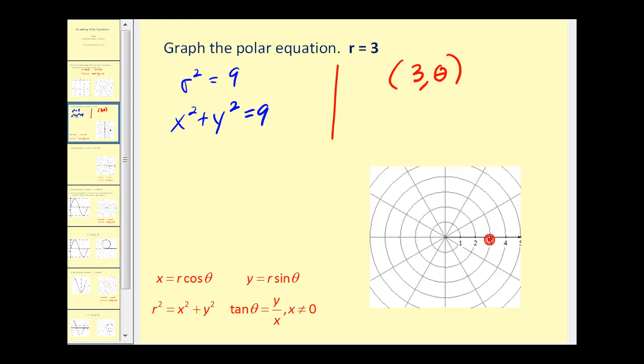So we'd have a point here when theta is equal to zero, when theta is 30 degrees, r is three, 60 degrees, r is three, 90 degrees, and so on. And what you'll see is we're forming a circle with radius three centered at the pole.